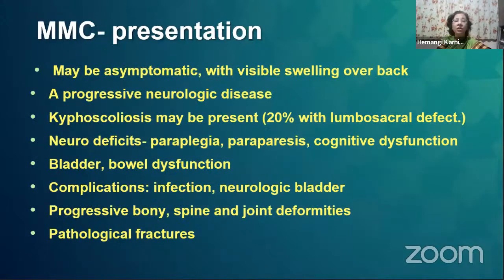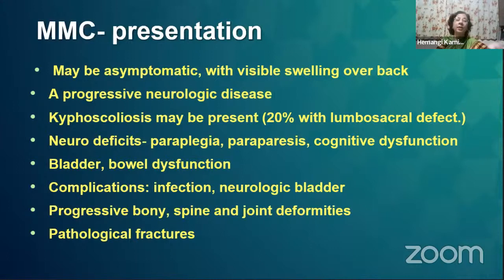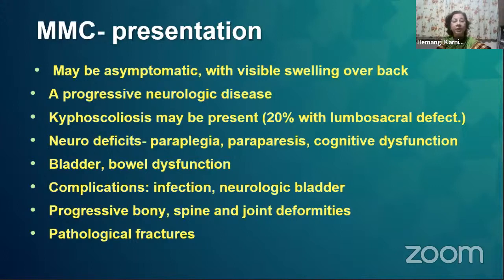Presentation varies among patients. The patient may be completely asymptomatic with only a visible swelling with intact skin, or there may be no skin present. There can be leakage of CSF, or the patient may have a progressive neurological disease. There can be kyphoscoliotic deformity. Neuro deficits can vary from completely normal to paraplegia, paraparesis, or cognitive dysfunction. Later on there can be bladder and bowel dysfunction, though initially this may not be apparent. Infection and progressive bony and joint deformities may occur, and as the patient grows, pathological fractures can also develop.